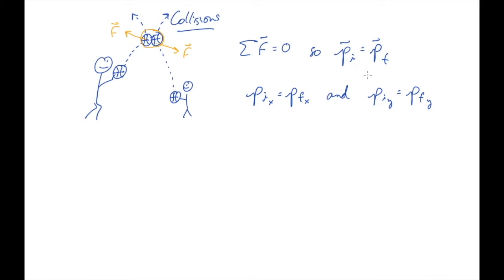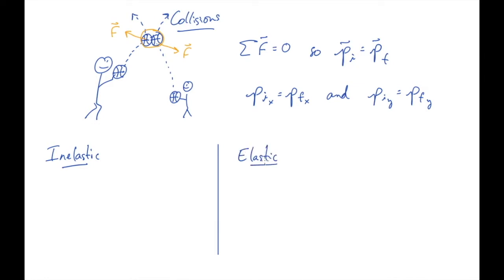As it turns out, there are two kinds of collisions that we'll talk about. There's a kind called inelastic, and there's a kind called elastic. For each of them, momentum is conserved — momentum is always conserved in a collision. So pi equals pf for both of these.